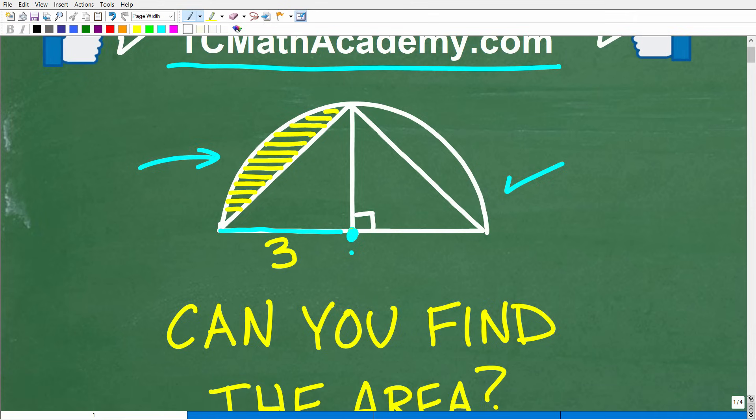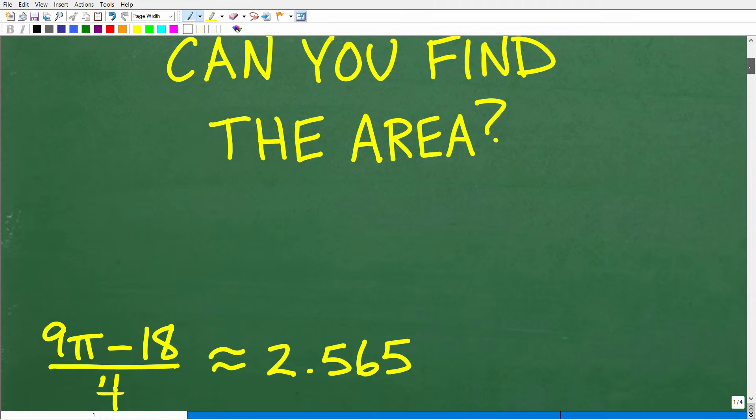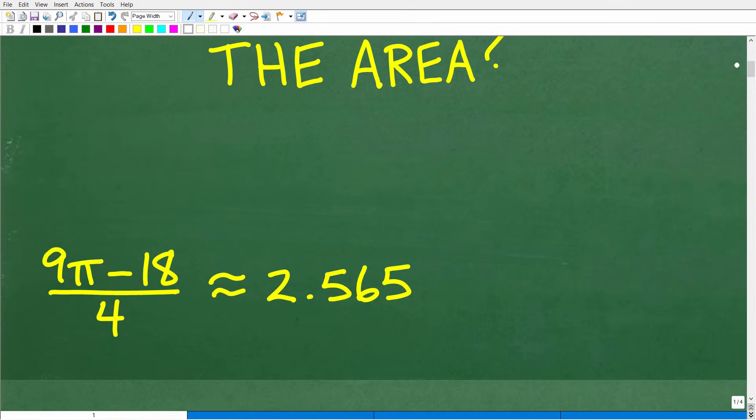Once again, we have this triangle inscribed in this semicircle and the radius is 3. We're looking for the area of this section right here. Let's take a look at the answer. The correct answer is one of two of the following. This would be considered the exact area: 9 pi minus 18 over 4 units squared.